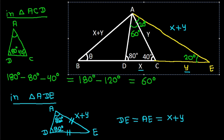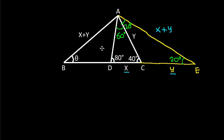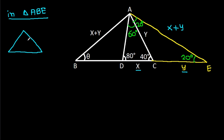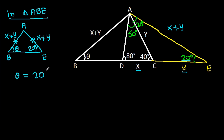Now in triangle ABE, BE is x plus y and AB is x plus y. So AB equals AE, which means these two angles will be equal. And this angle is 20 degrees and this angle is theta. So theta will be 20 degrees.